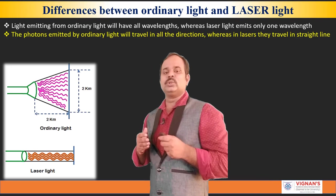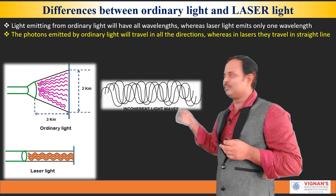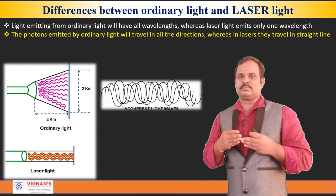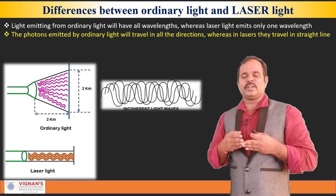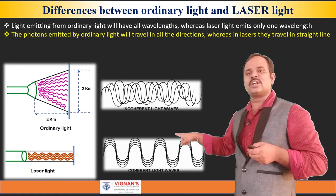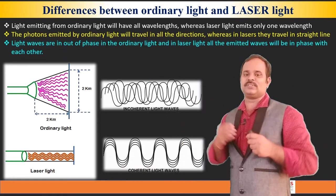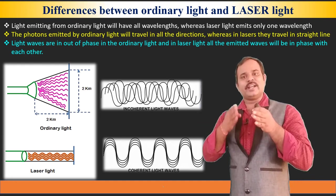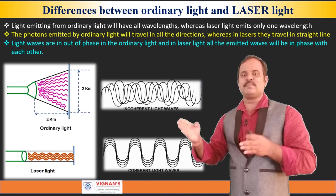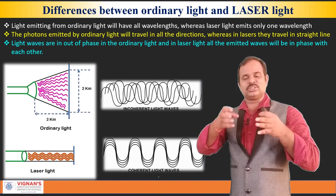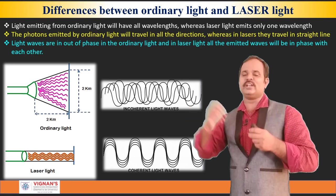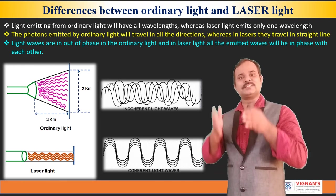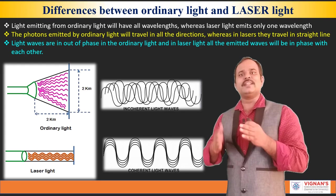In addition to this, you can see in the ordinary light source, if you see the photons' wave character, there is no phase relationship between them. That means they are incoherent waves. And in the case of laser, you can see all the waves are traveling in the same direction with a constant phase difference. So the laser light is more coherent in nature. Whereas in the case of ordinary light, the light waves which are emitting are incoherent in nature. These are some of the differences which we can find, and because of these different characteristics of the laser, they find a lot of applications.